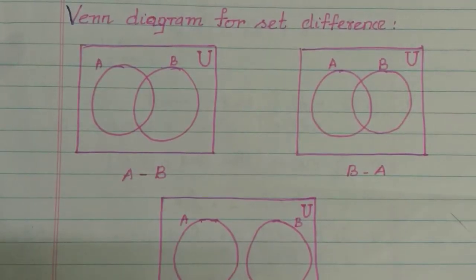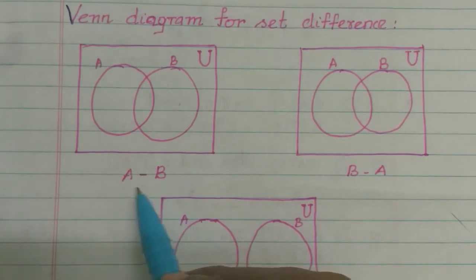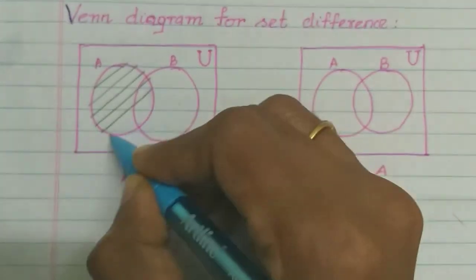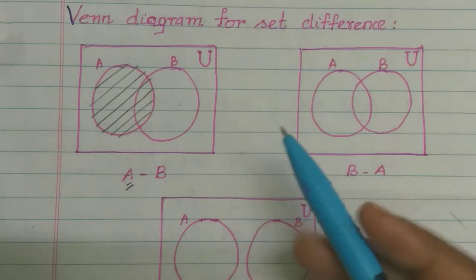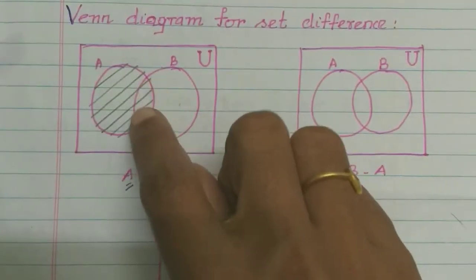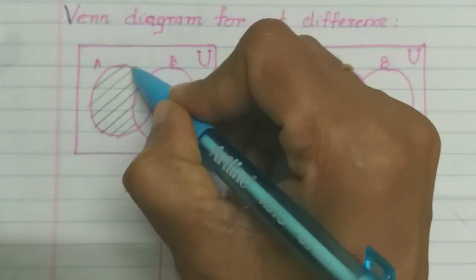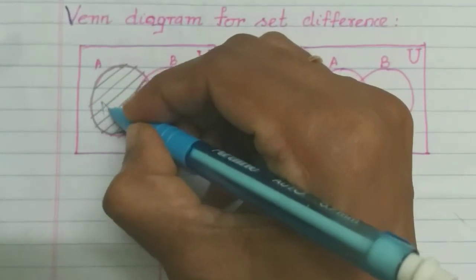Now the difference of two sets can be represented using a Venn diagram. We have set A and set B. For A minus B, we take the full circle of A and remove the intersection part A intersection B. So the remaining part is A minus B.